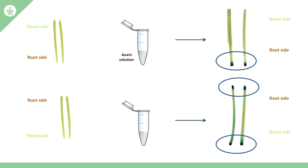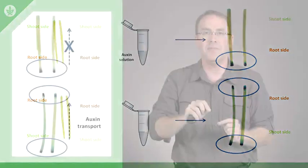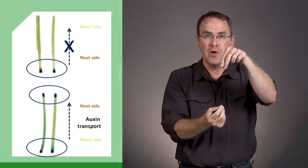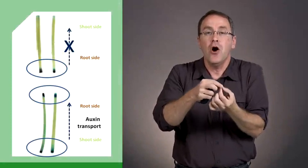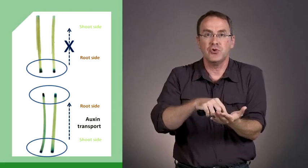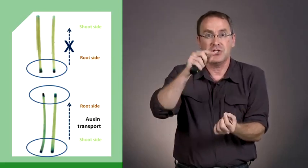In other words, somehow or another, the auxin is being transported from the bottom to the top here, which is transporting from the shoot to the root. Let me go through this experiment again. When we have the shoot side at the bottom, we find the auxin activity only at the bottom. Auxin isn't transported up the stem from the roots to the shoots.